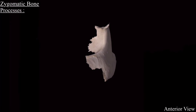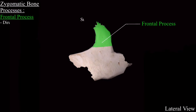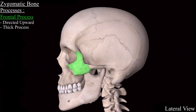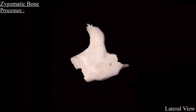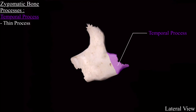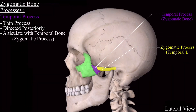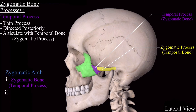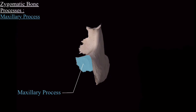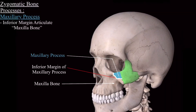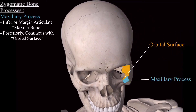The three processes of the zygomatic bone: the frontal process is directed upward and is thick and prominent, articulating with the zygomatic process of the frontal bone via the frontozygomaticus suture. The temporal process is thin, directed posteriorly, and articulates with the zygomatic process of the temporal bone, together completing the zygomatic arch. The maxillary process articulates inferiorly with the maxilla bone and is continuous posteriorly with the orbital surface.